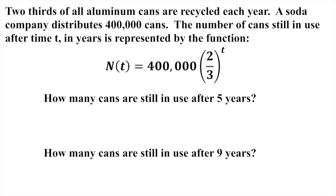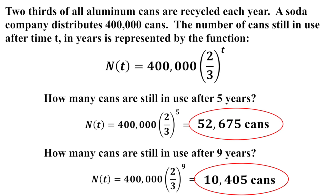Here's a decay example: starting with 400,000 cans, the decay factor is two-thirds. After five years the count falls to about 52,000 cans, and after nine years to about 10,000 cans. This reflects real-world recycling — when you recycle a can, you come away with less material than you started with, though recycling still helps by reusing the product.